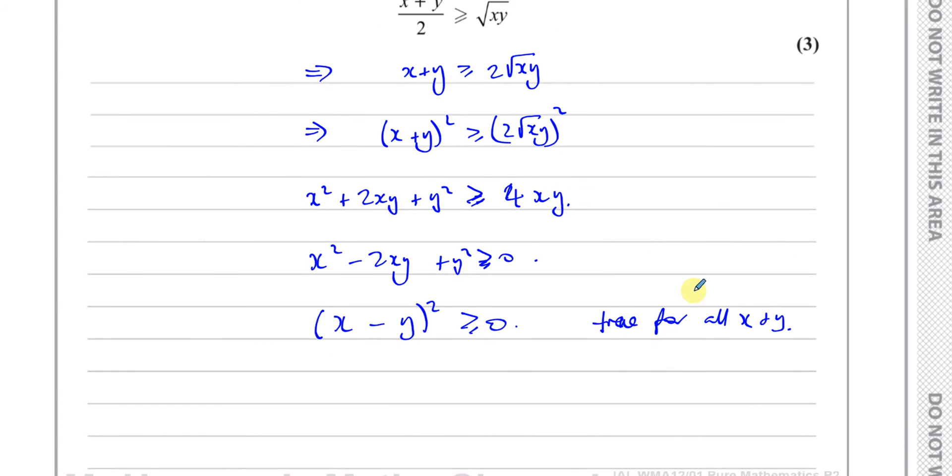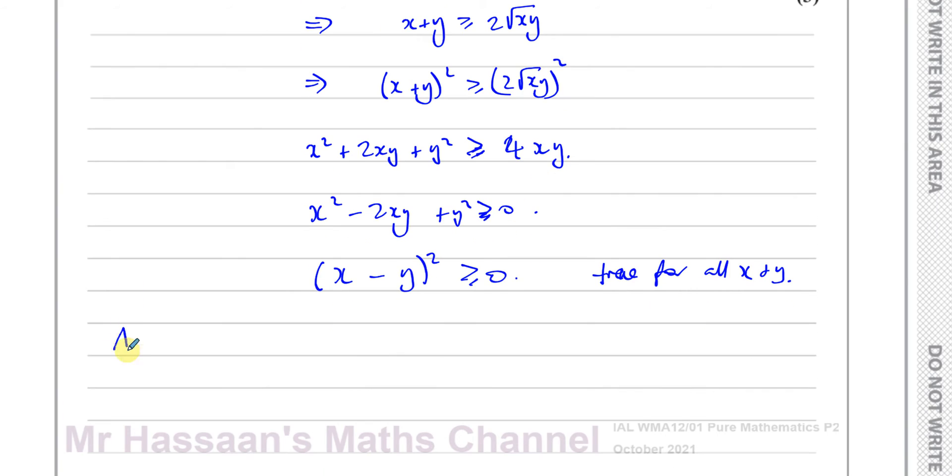So therefore, we can say as what we ended with is true. Therefore, what we started with must be also true. Therefore, x plus y is greater than or equal to 2 times root xy. All right, this statement must be there for you to get the full marks. You must mention a conclusion to your statement. Okay, it's very important to have that statement there.